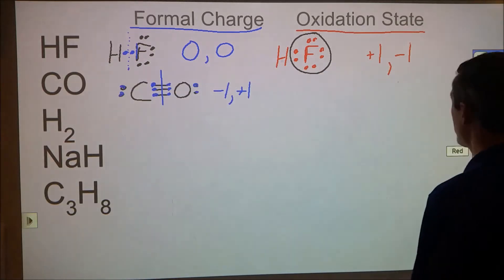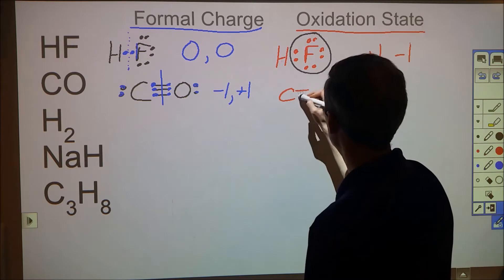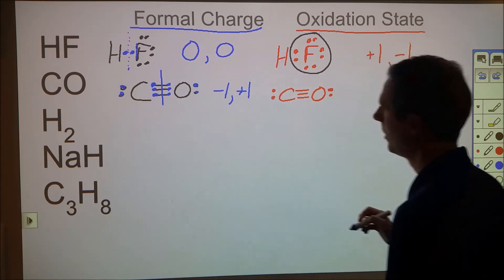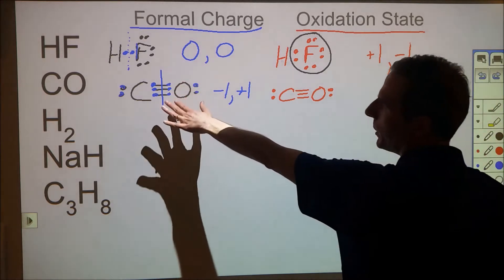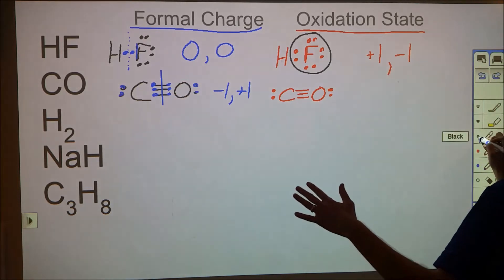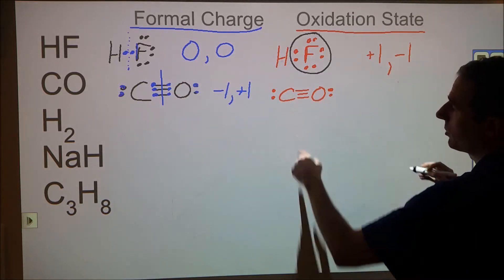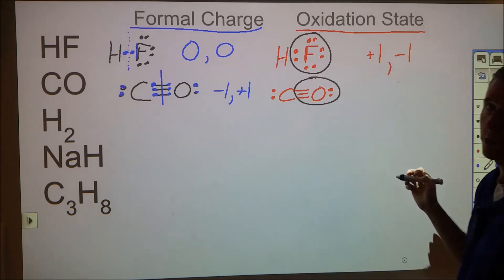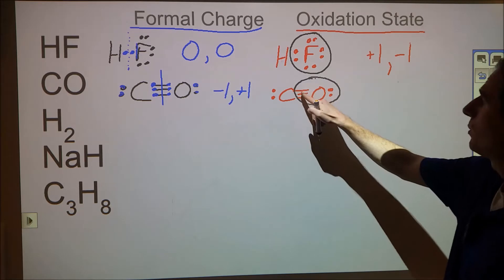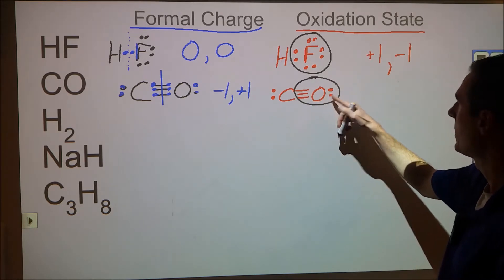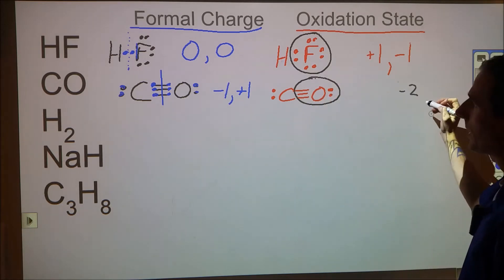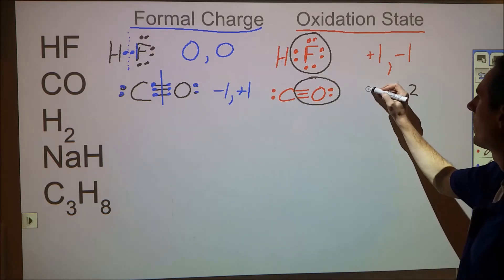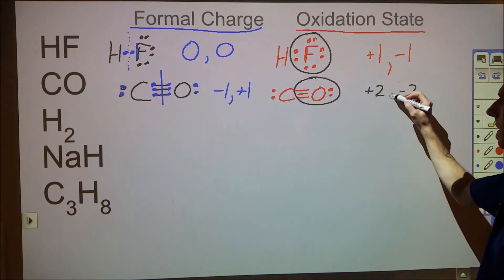From an oxidation state perspective for CO, one atom is the winner and one is the loser. Oxygen is more electronegative than carbon, so every electron gets assigned to oxygen: two, four, six, eight electrons total. That gives oxygen a −2 oxidation state. Carbon has only two electrons when it should have four, so it gets a +2 oxidation state.